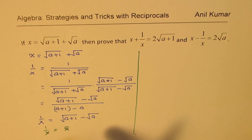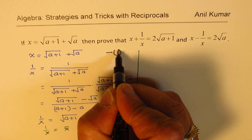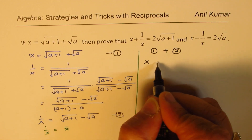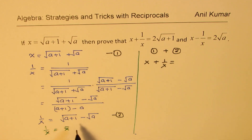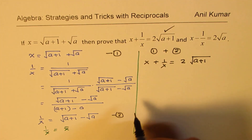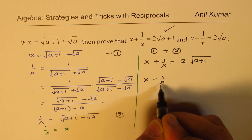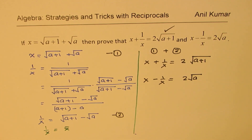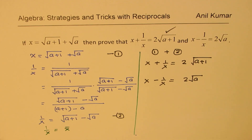Let me call these equation 1 and equation 2. If I add them — x plus 1 over x — we get twice square root of (a+1). That is what we wanted to prove. And if we subtract one from the other, the first terms cancel and we get 2 times square root of a. Simple derivation, but it has huge implications in multiple choice questions — very popular questions. You need to answer those questions within a few seconds, and now with this technique you should be able to answer them in no time.